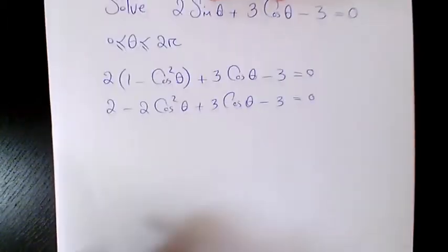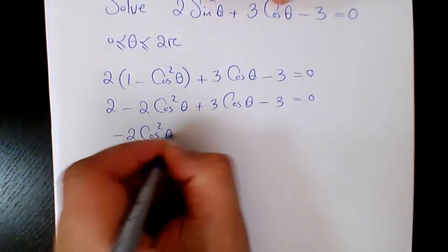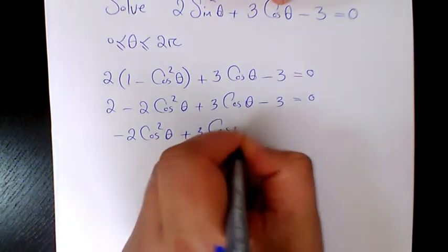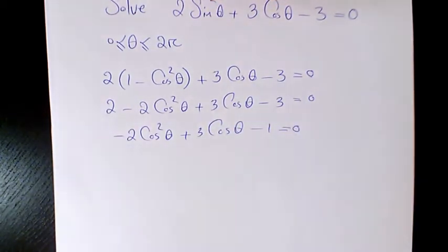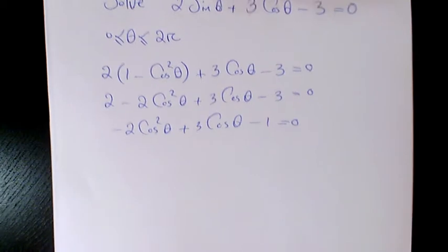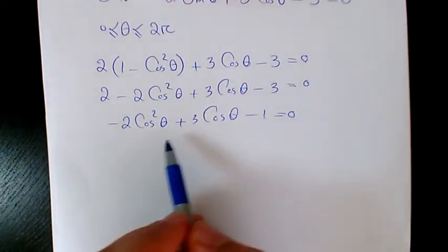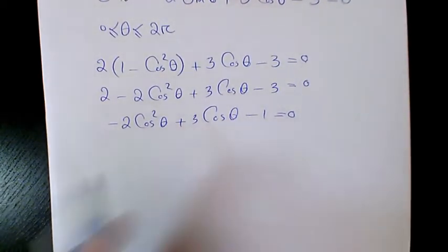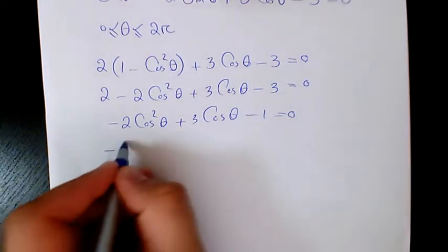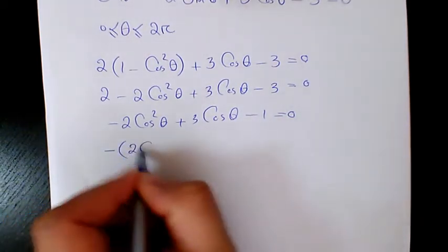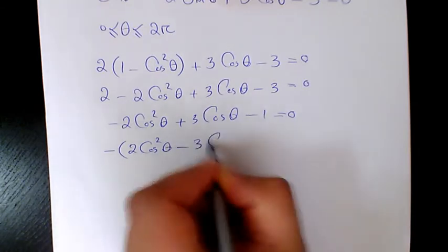So we have negative 2 cosine squared theta plus 3 cosine theta minus 1 equals 0. Now let's factor — first we factor out the negative, giving us 2 cosine squared theta minus 3 cosine theta plus 1 equals 0.